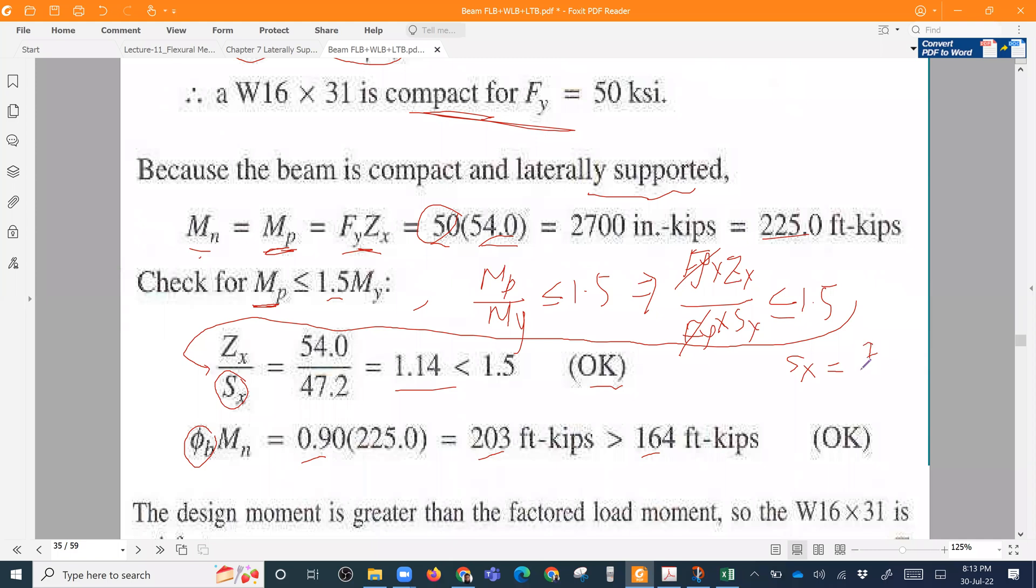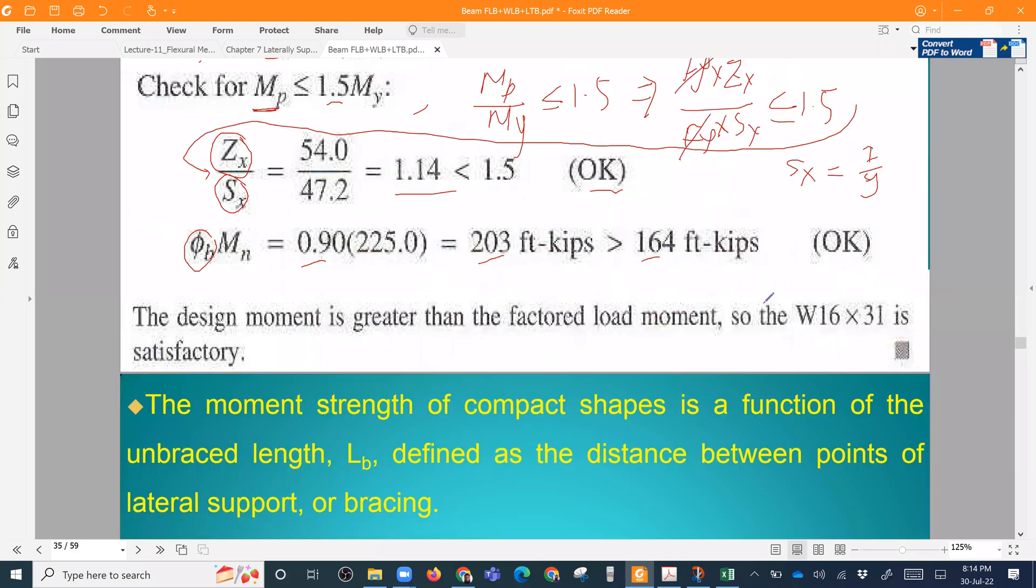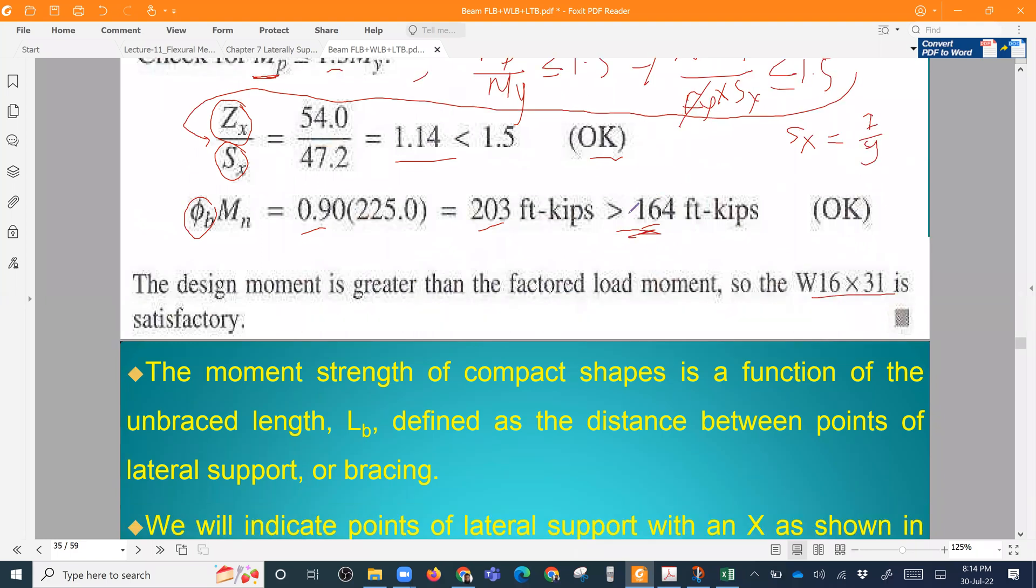Sx is the elastic section modulus, Zx is the plastic section modulus. So this is our check. This section is adequate. The moment capacity is greater than the ultimate moment, so since the moment capacity is better, the section is adequate.